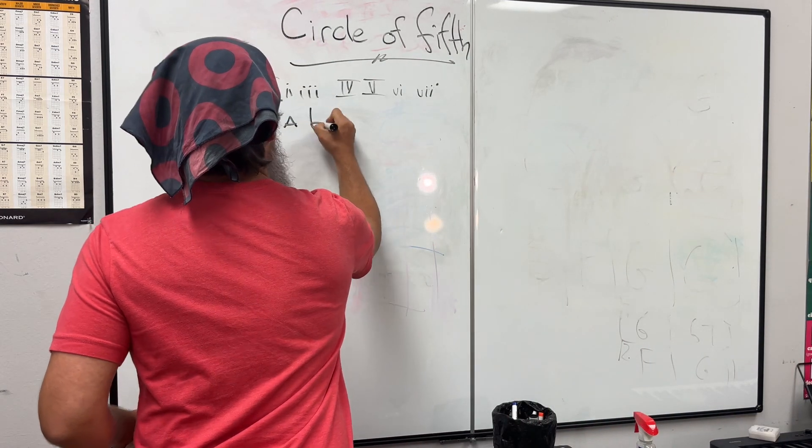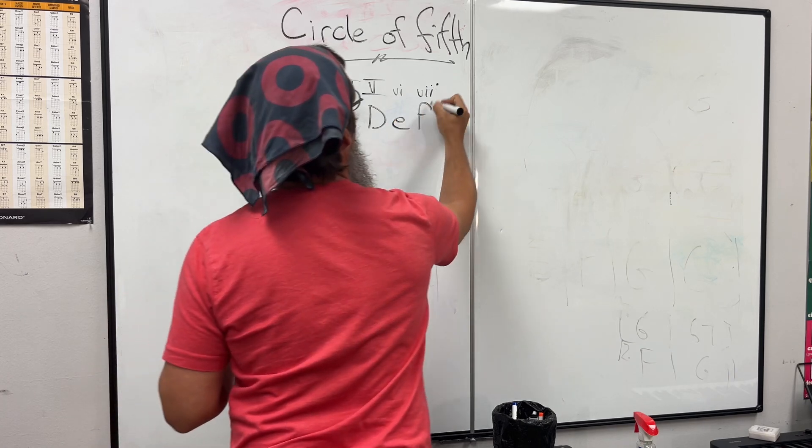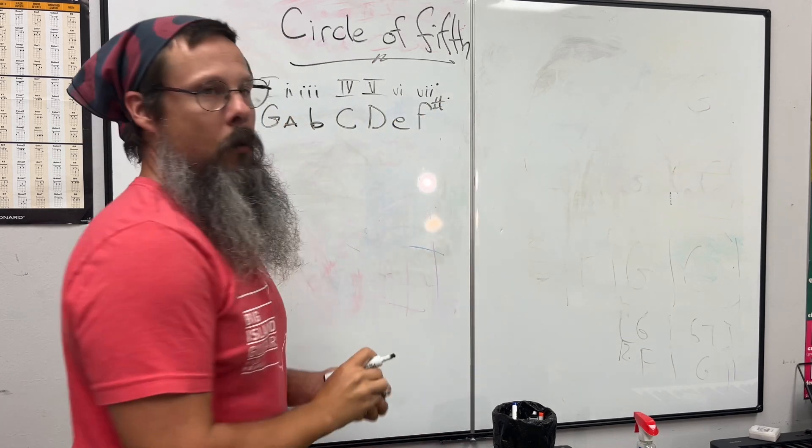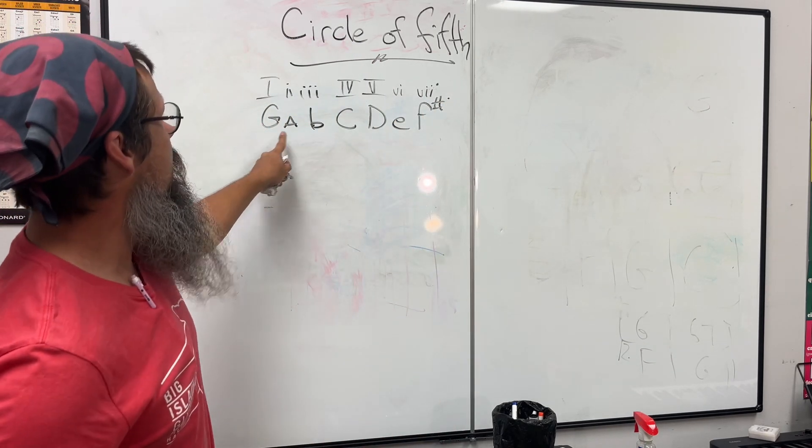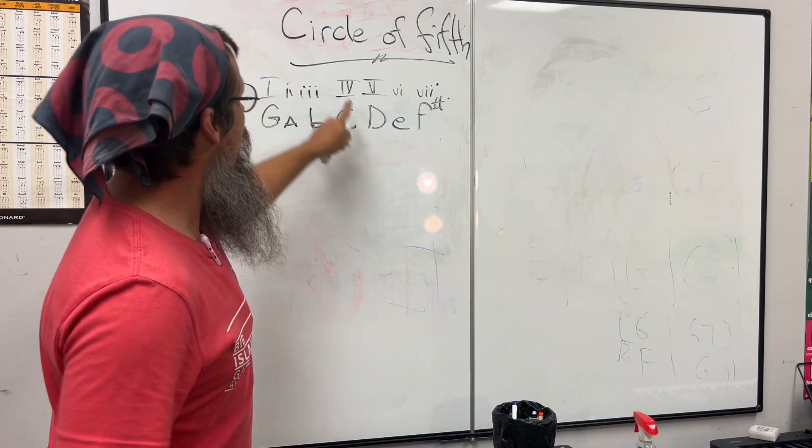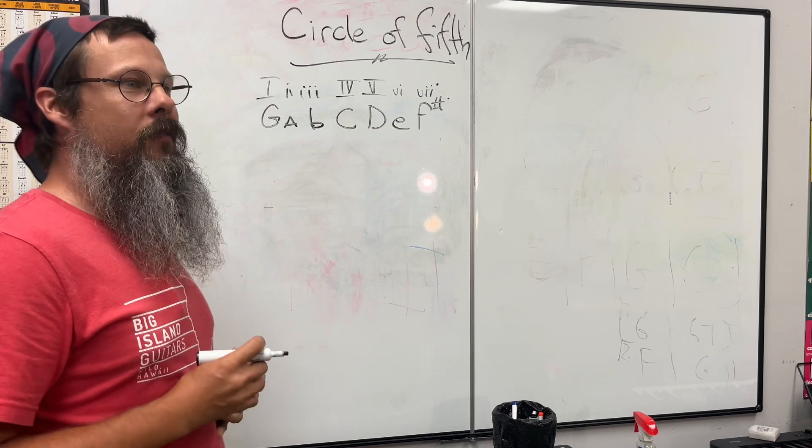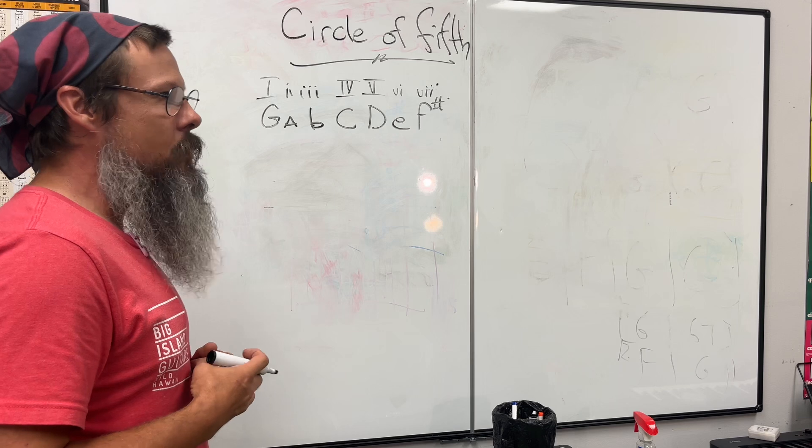G major, A minor, B minor, C major, D major, E minor, F sharp diminished. When we go through these - G major, A minor, B minor - these are the one, four, and five. Notice the upper letters. This is a way of seeing chords in sort of like a cheat sheet. Most jazz musicians know how to read this.